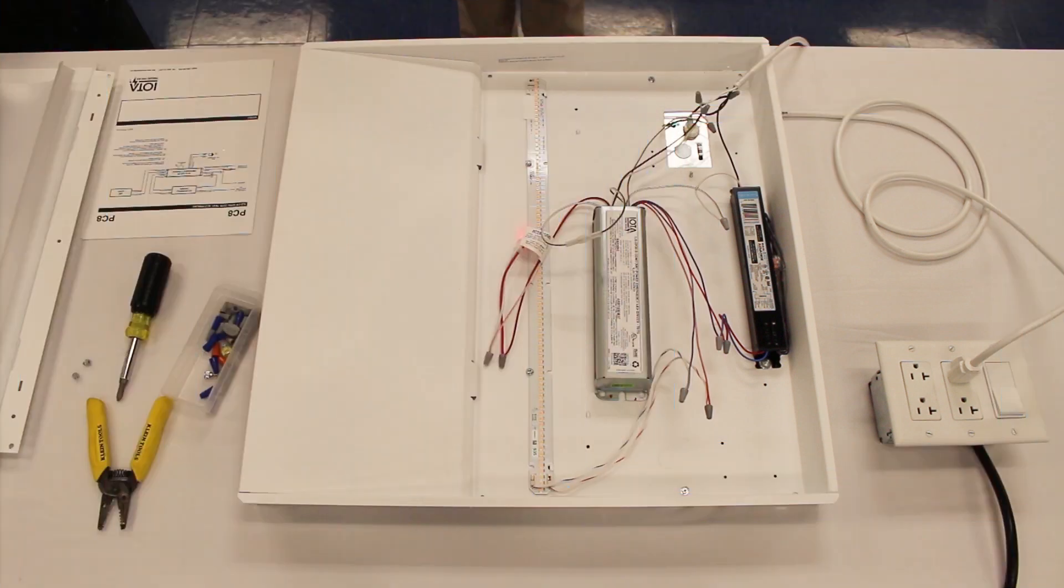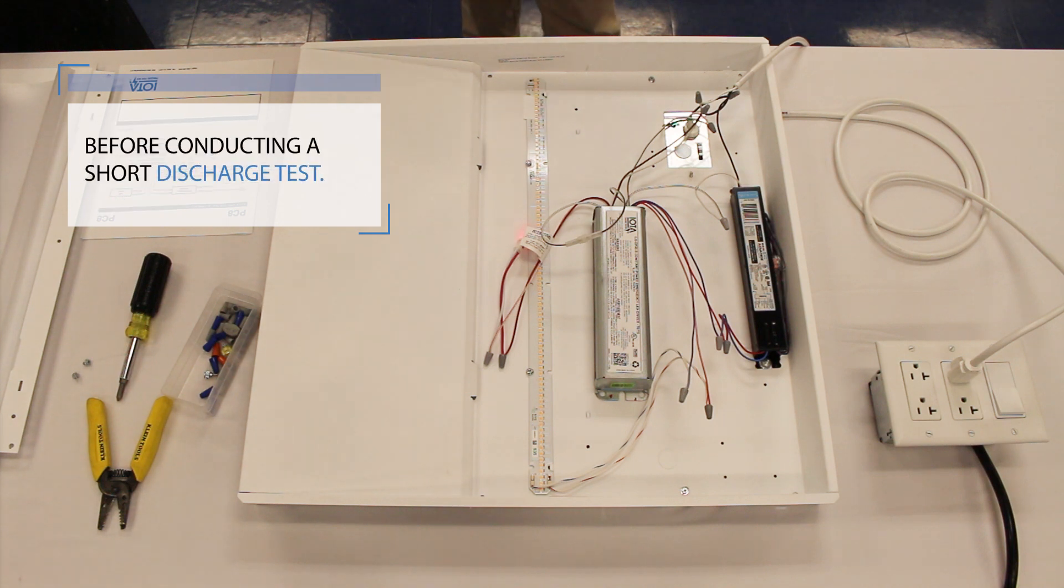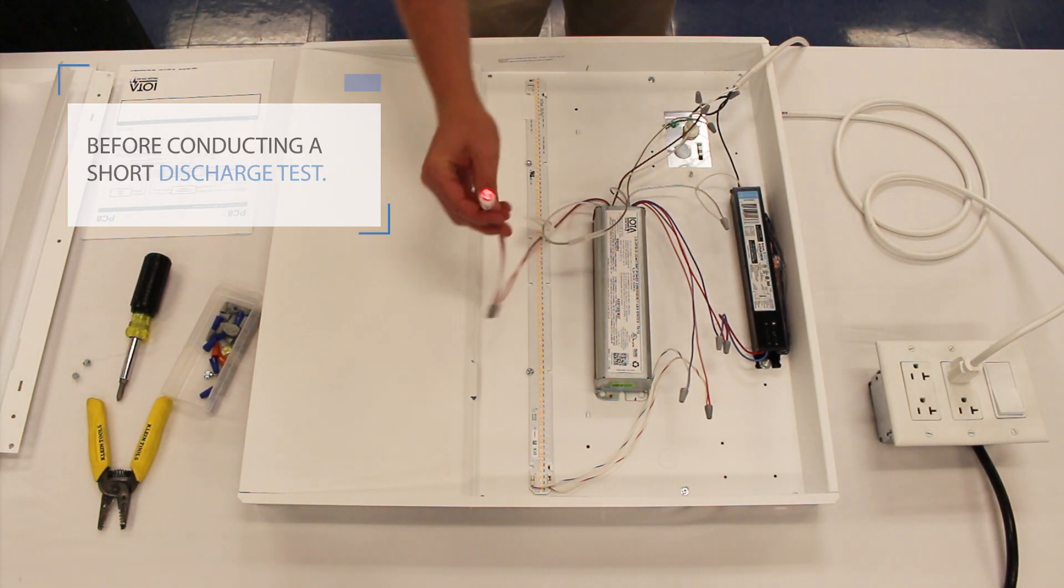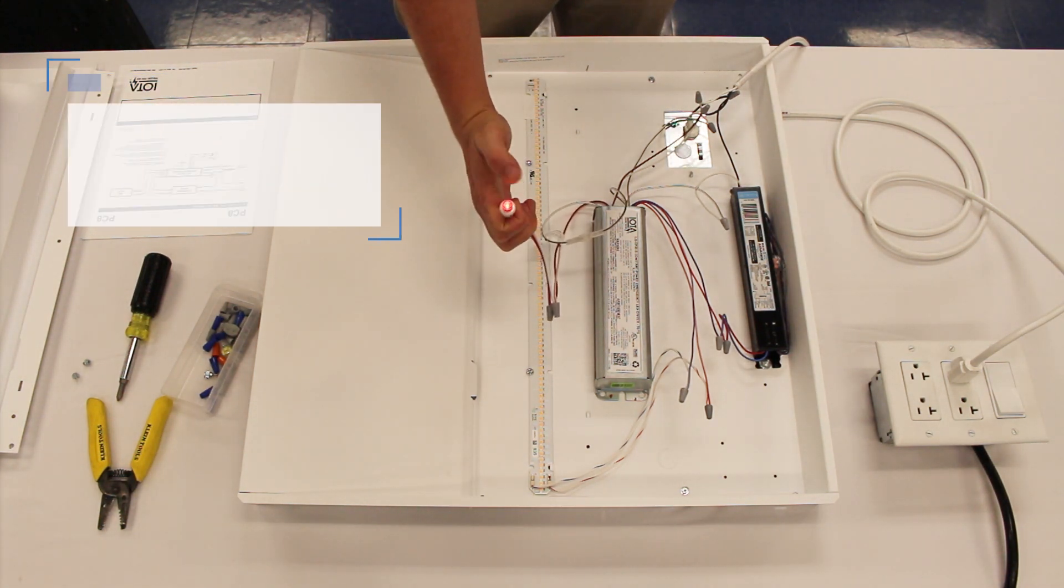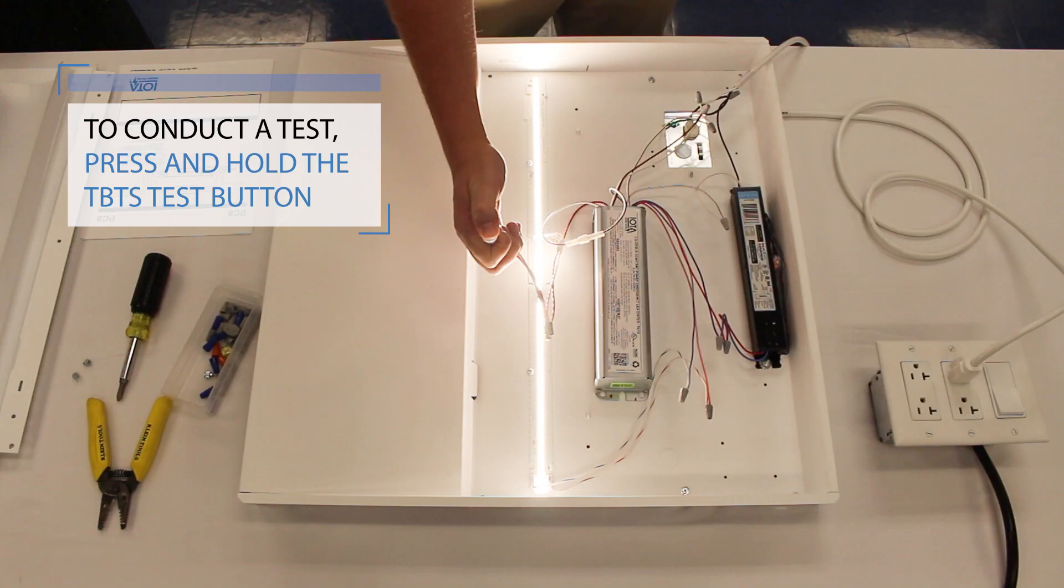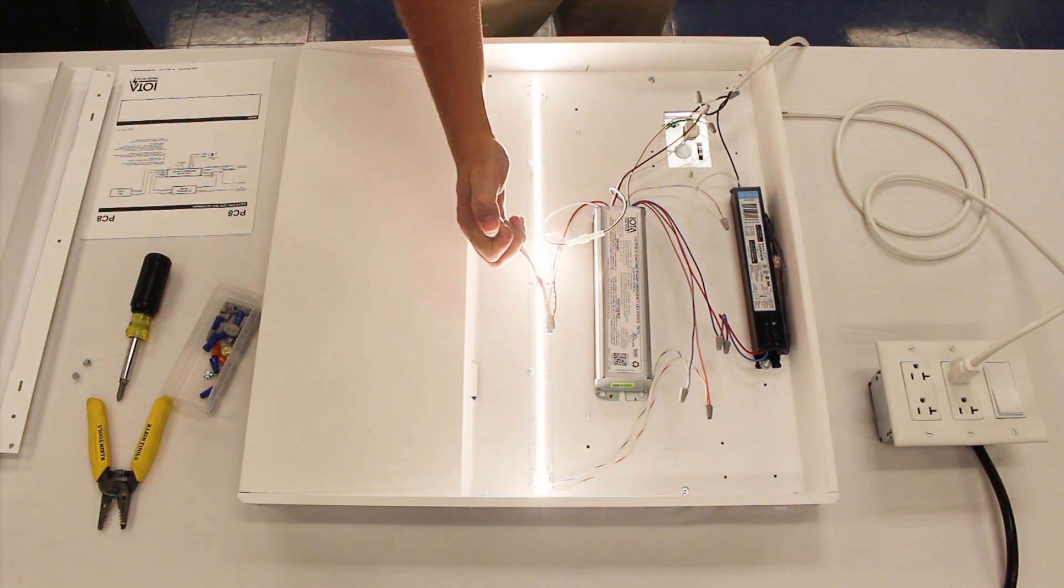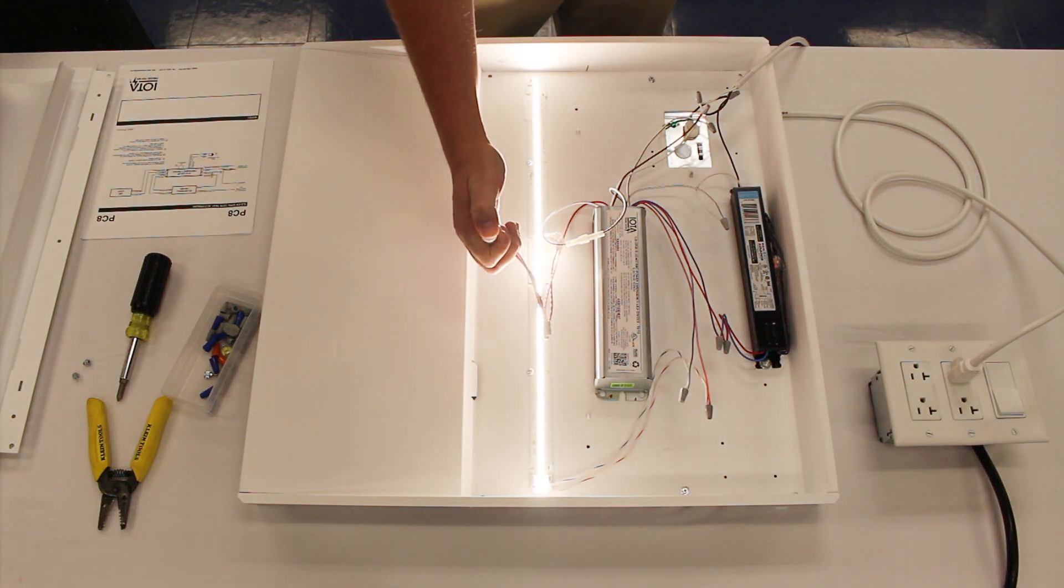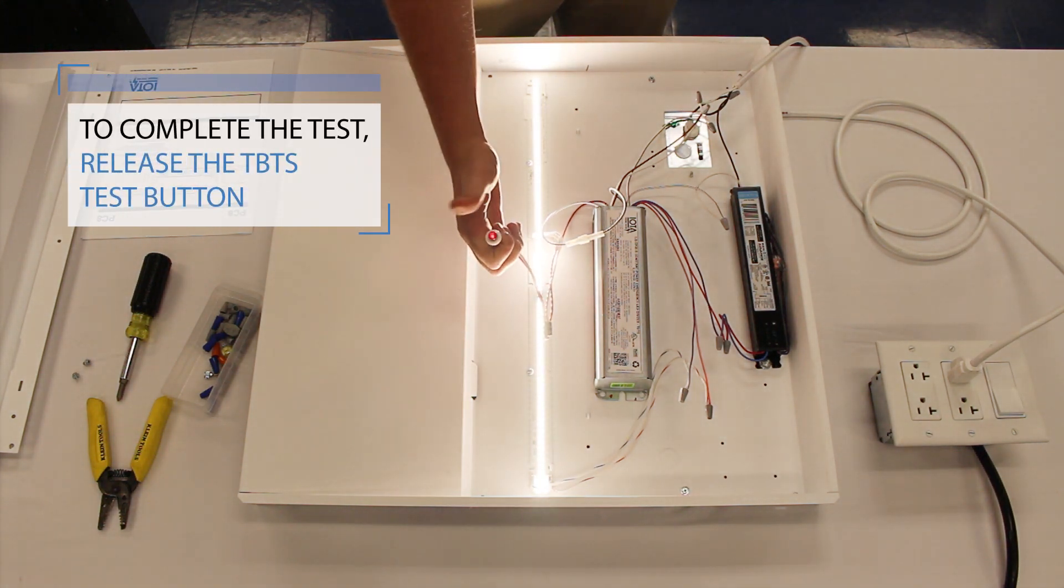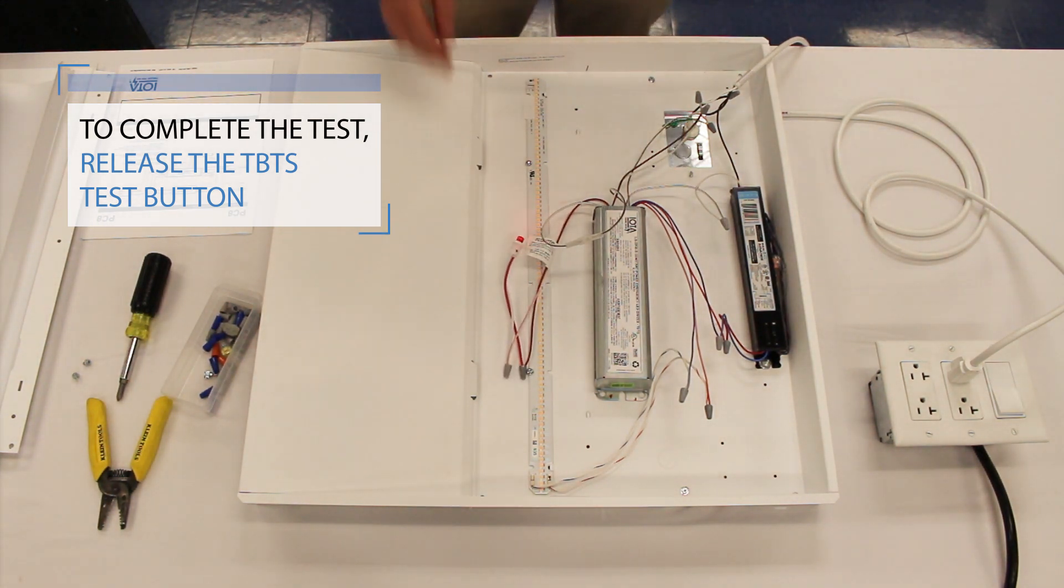After your ILB-CP LED emergency driver has been installed and wired correctly, allow the unit to charge for at least one hour before conducting a short discharge test. To conduct a test, press and hold the TBTS test switch. Your LED module should illuminate if it was switched off or remain illuminated if it was already on. To complete a test, release the test button. Your LED module should now return to its normal operation.